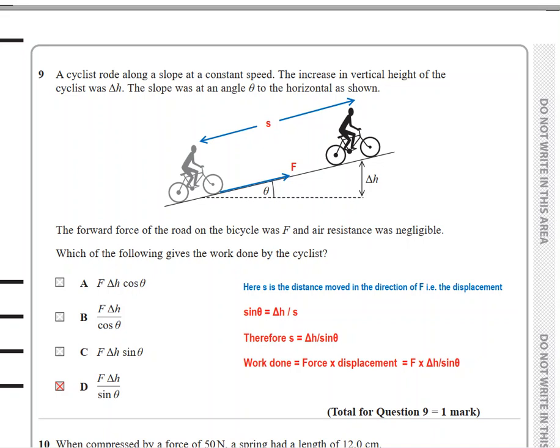And the hypothesis is s. So work done equals force times displacement. You can clearly see from here that displacement s is equal to Δh by sine theta. So F times Δh divided by sine theta is my answer. Answer is D.